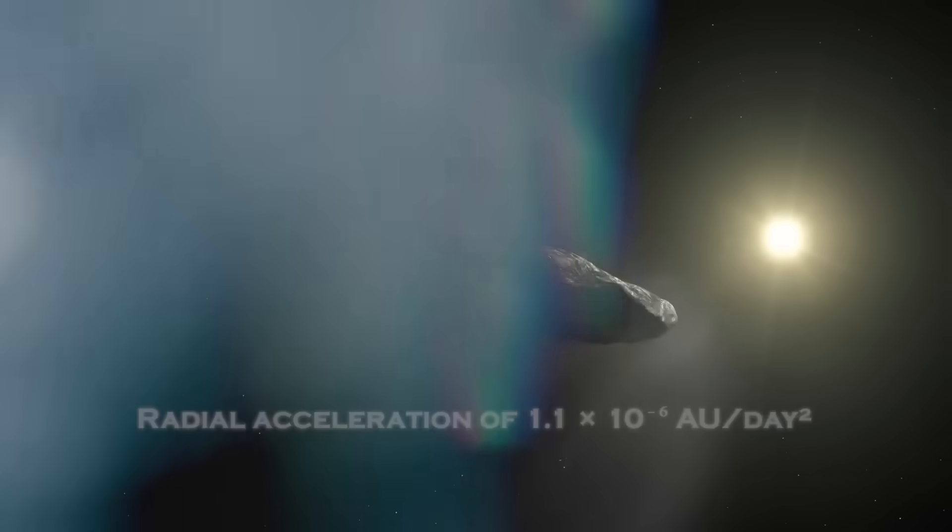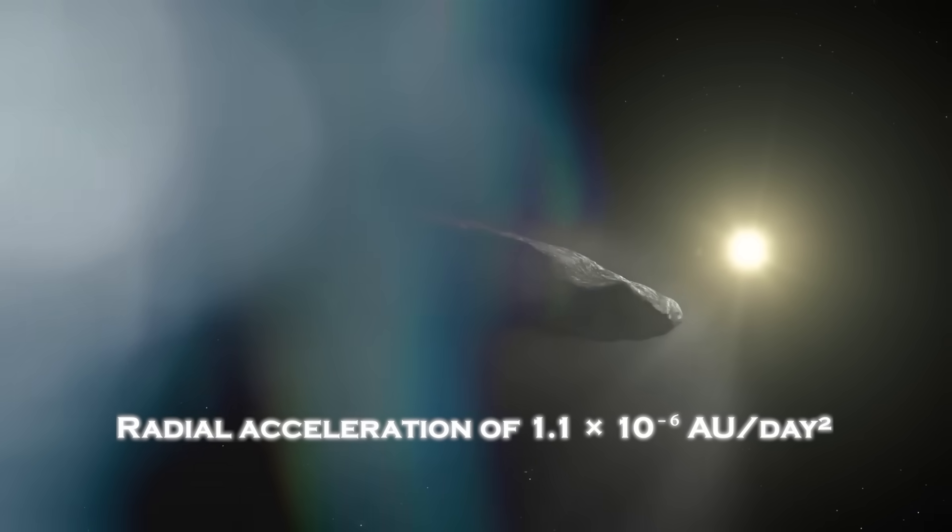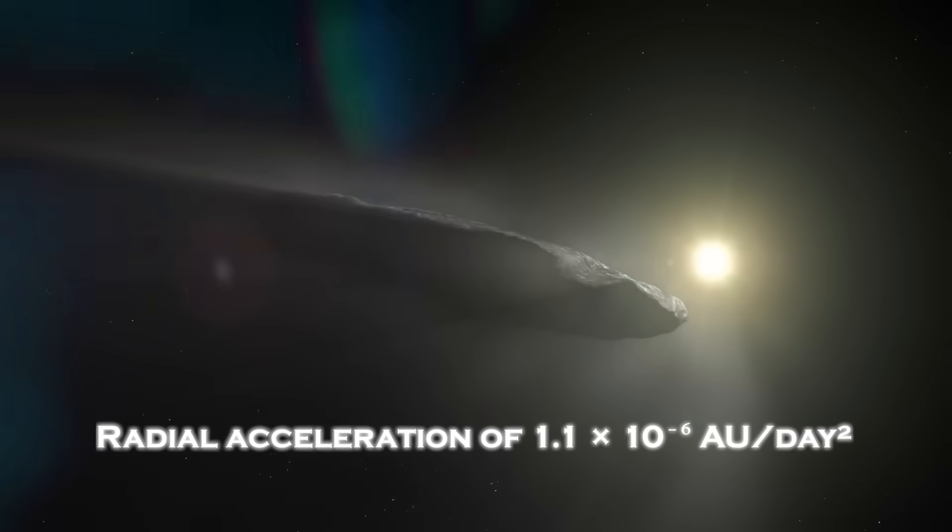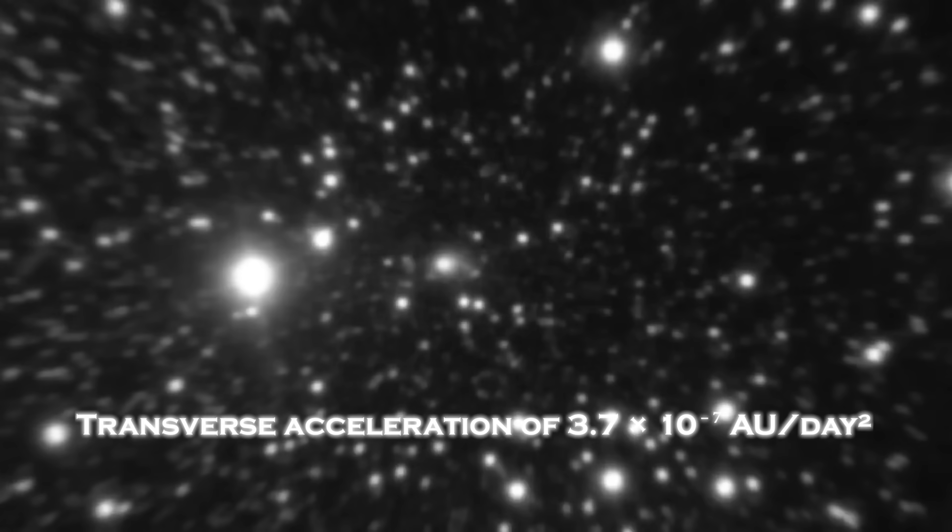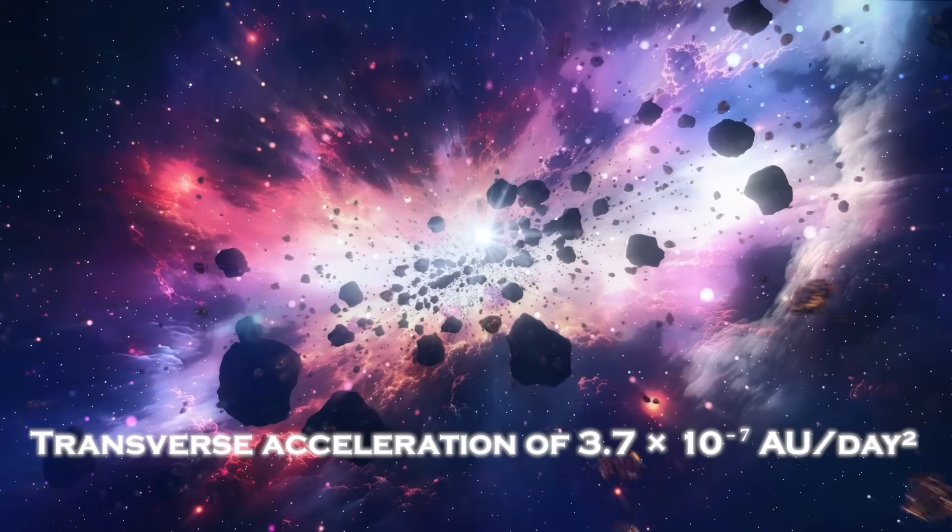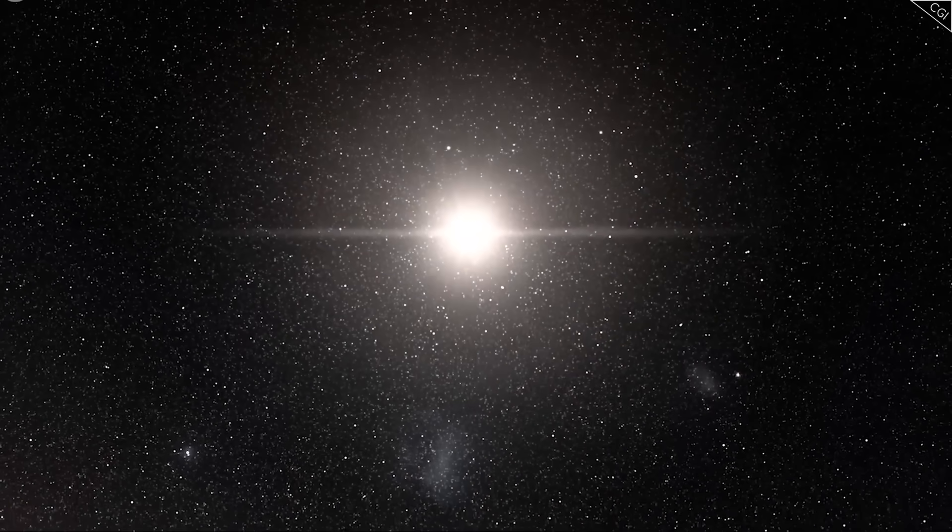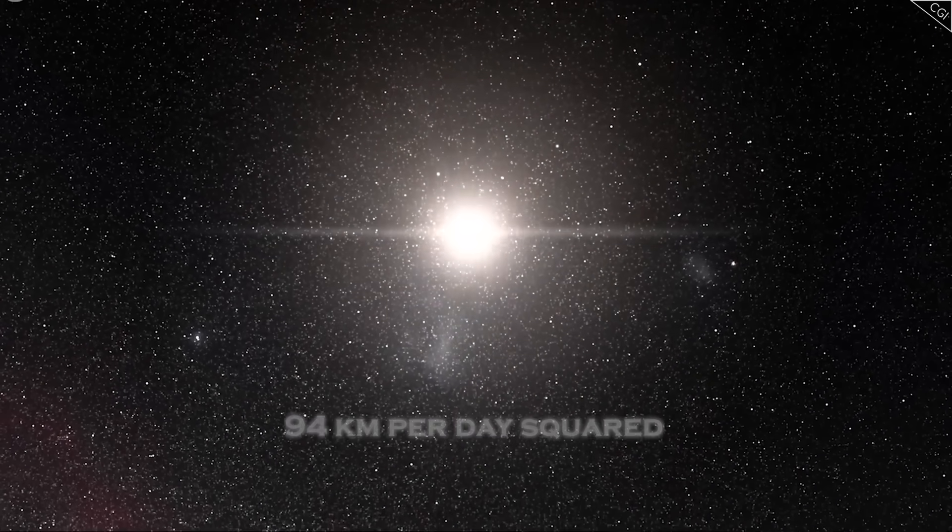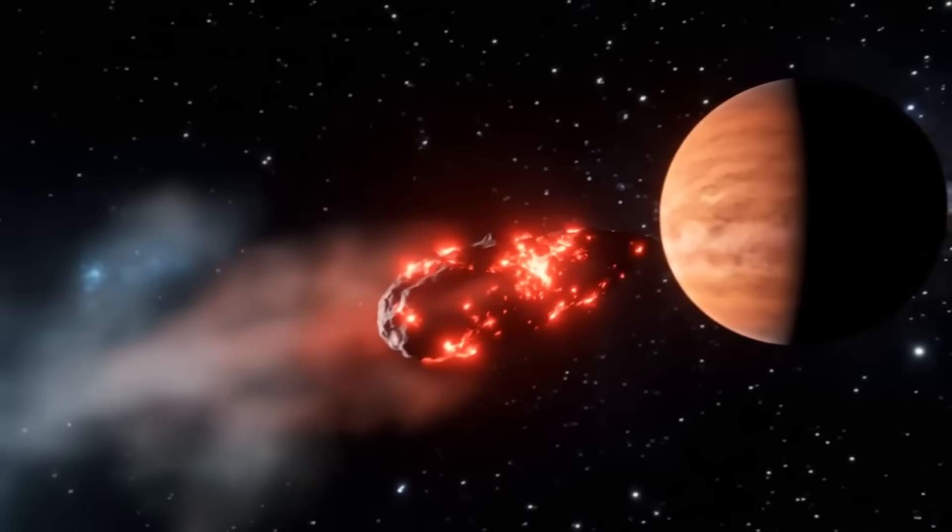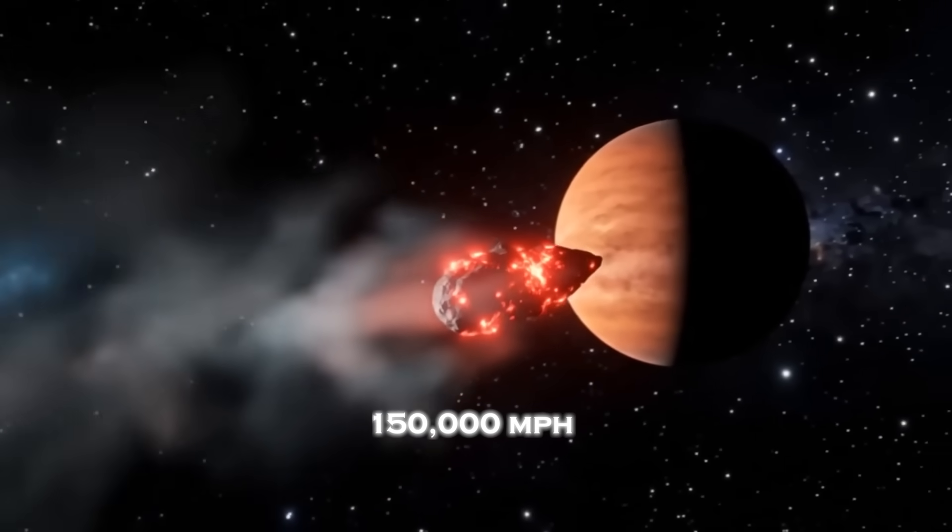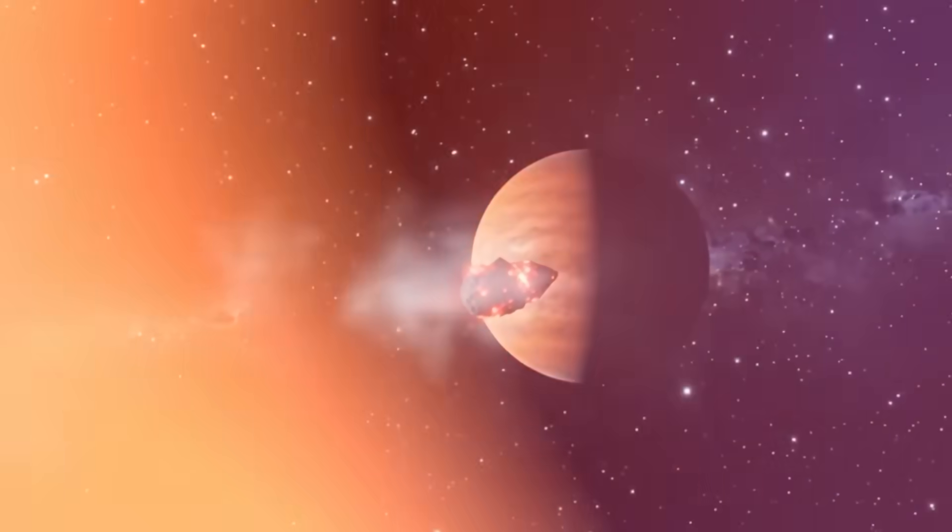The Harvard-tracked numbers show a radial acceleration of 1.1 times 10 to the negative 6th astronomical units per day squared, and a transverse acceleration of 3.7 times 10 to the negative 7th astronomical units per day squared, resulting in a cumulative increase of 94 kilometers per day squared at perihelion. To put that in perspective, the object was already moving at 150,000 miles per hour, yet it somehow found more speed without any visible force acting on it.